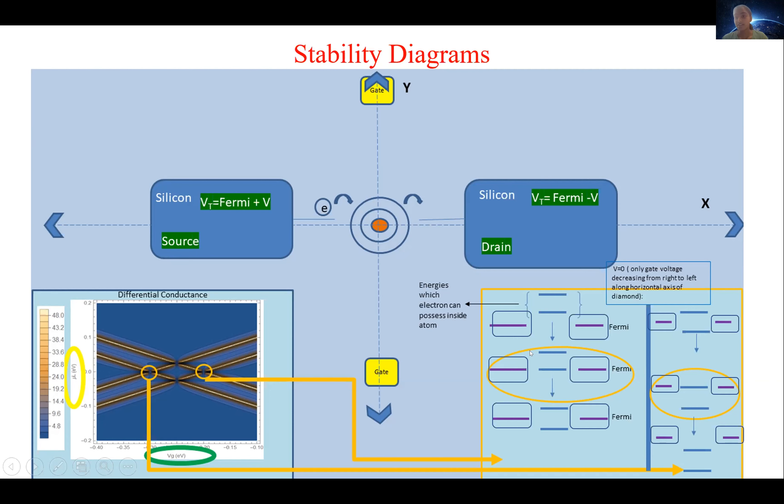So the current is dependent on which atomic energy levels are open for transport, and this is reflected in diamond width, height, and position.